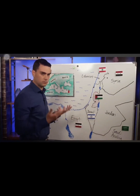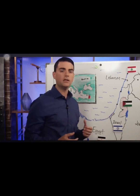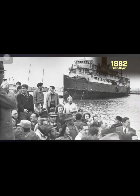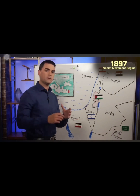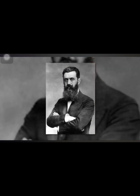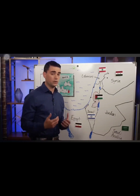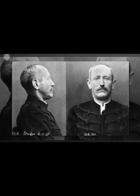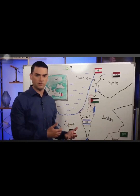The first major aliyah — meaning 'to go up' in Hebrew, referring to a spiritual rising when going to the Holy Land — is around 1882, mostly Russians attempting to escape pogroms happening in Russia. By 1897, the Zionist movement begins — the idea of an independent Jewish state in Israel — launched by Theodore Herzl, founder of the World Zionist Organization. He was not a particularly religious Jew and launched this after the Dreyfus Affair, in which a Jewish member of the French army was falsely accused of spying for the Austro-Hungarian Empire, unleashing a giant wave of anti-Semitism.